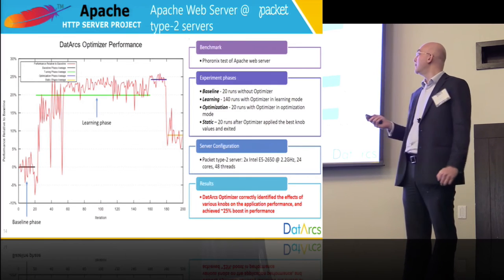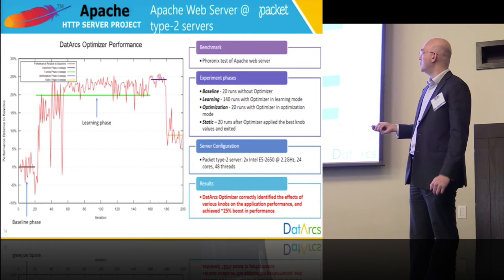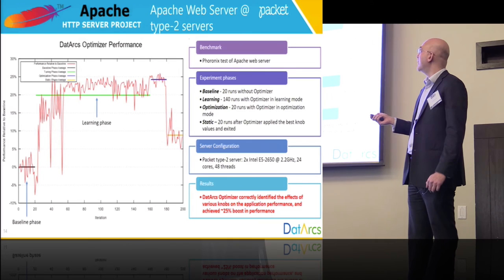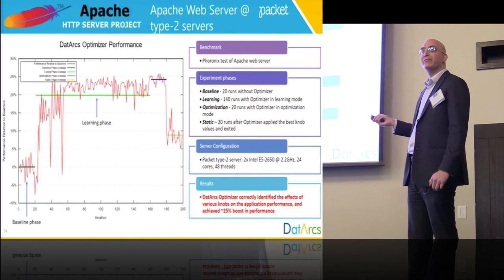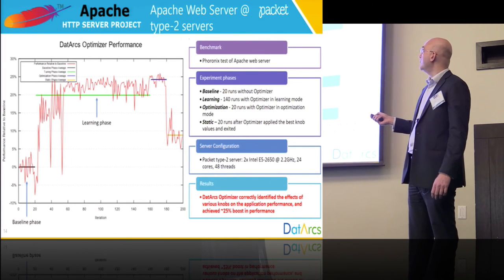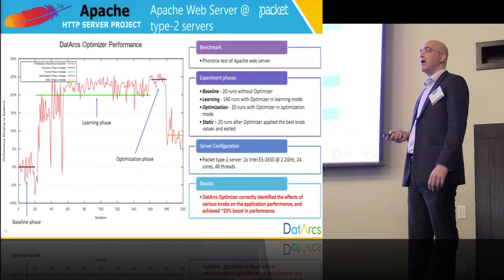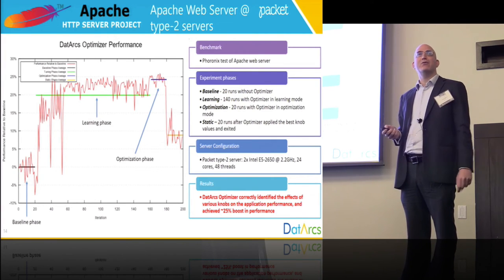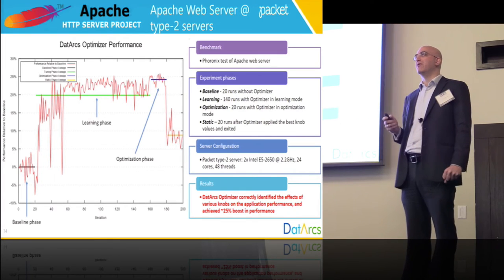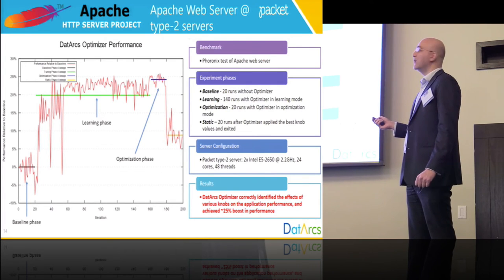Then we start our service in the background and run the application for 140 runs. This is where things get interesting — you see in the beginning, around the 20-something runs, you can see the jitter. It goes down, then you see the jittery behavior. But after a while it starts to stabilize. It's above 20% improvement. All we have to do is run optimizer in the background — we got 20%.